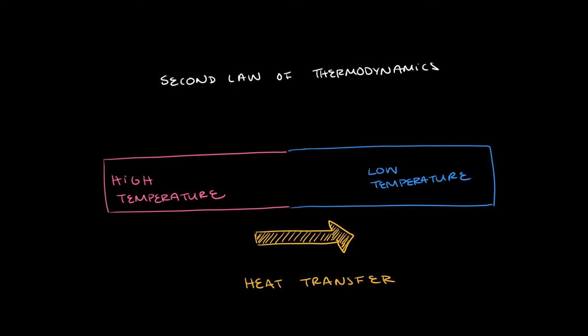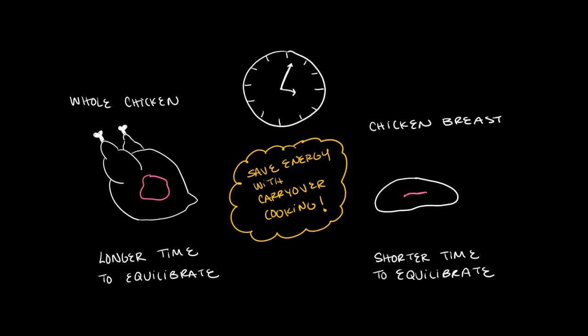According to the second law of thermodynamics, heat spontaneously flows from high temperature to low temperature, so the inside still receives heat and becomes more cooked until the temperature is the same for all parts of the chicken.